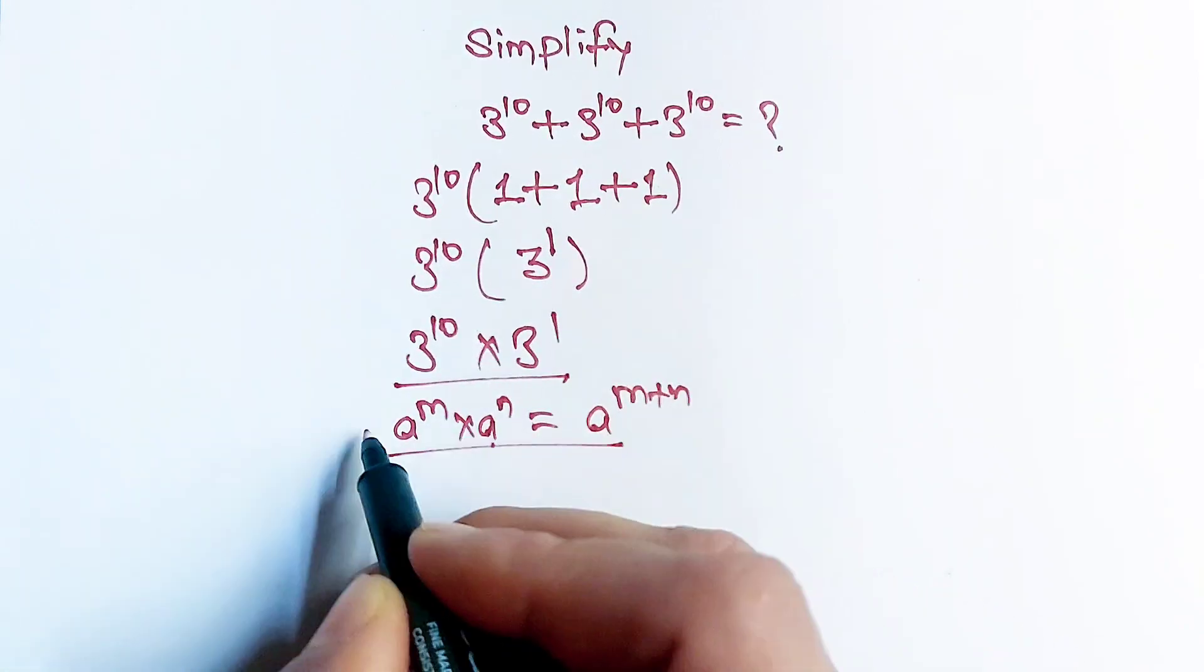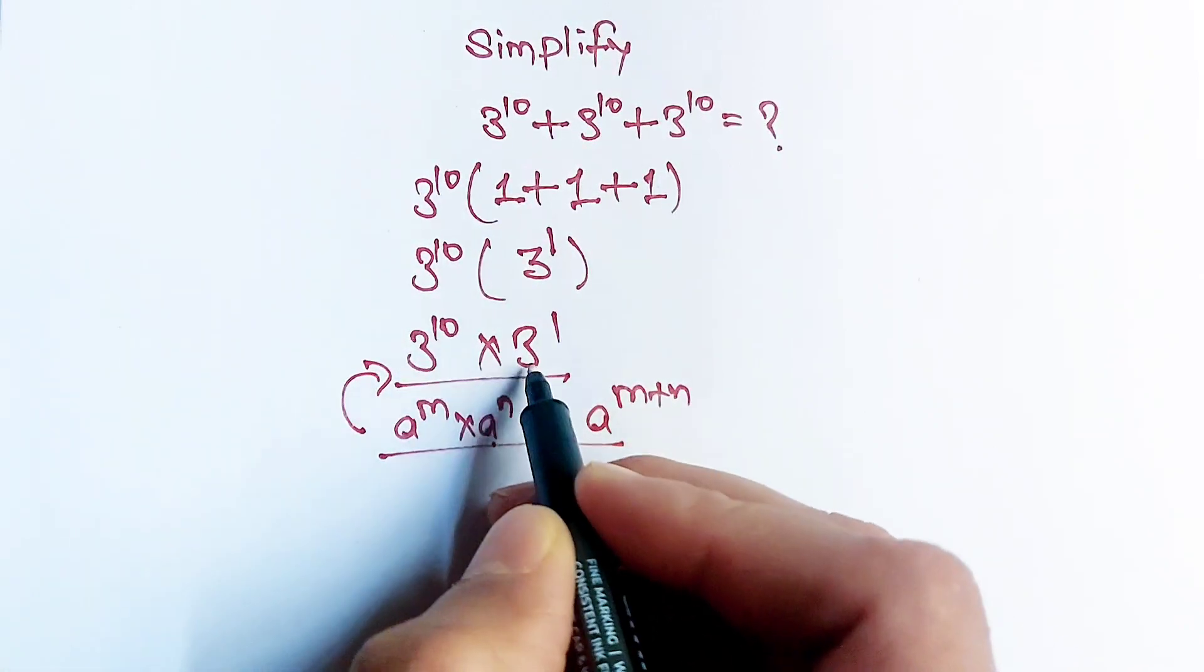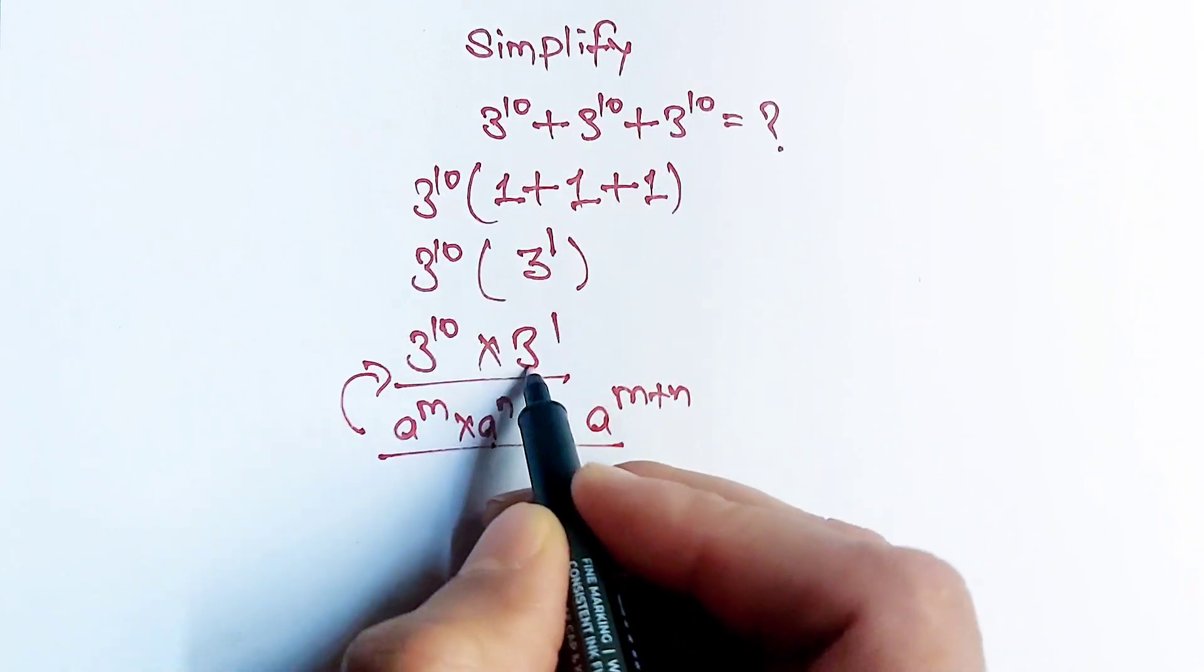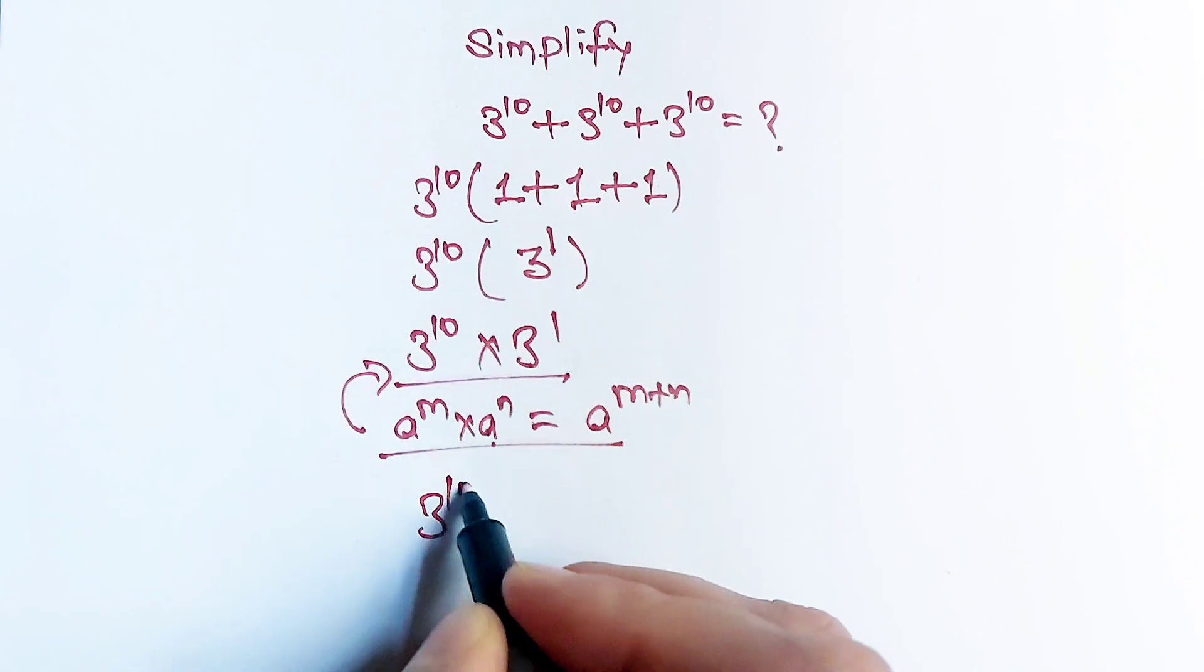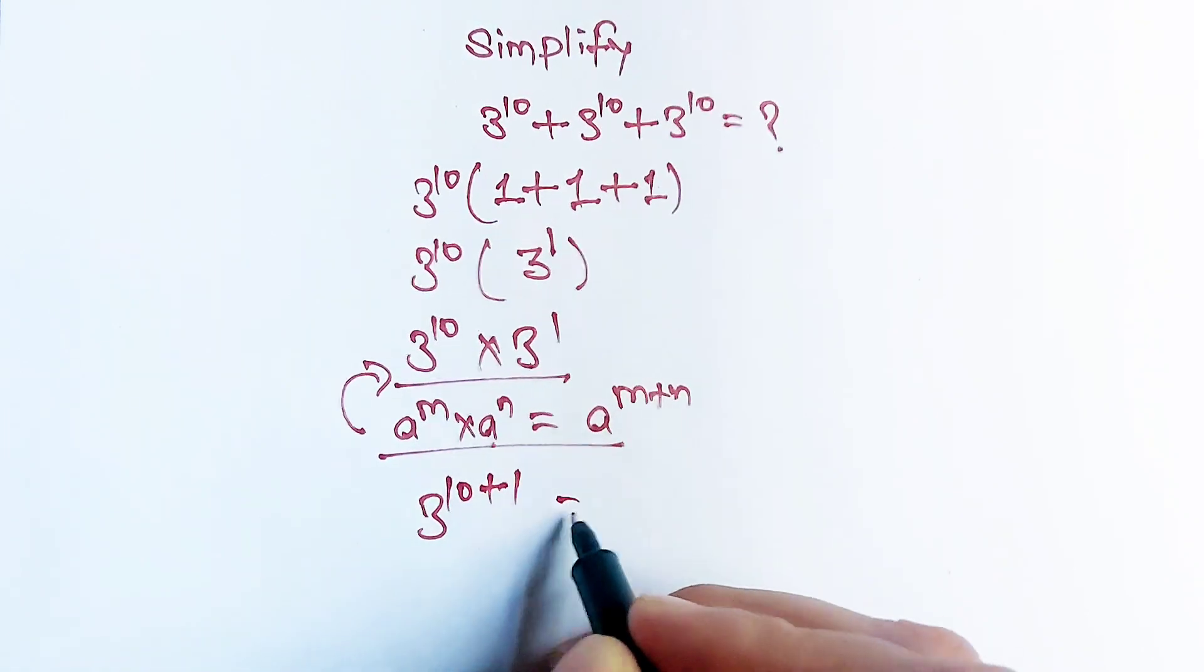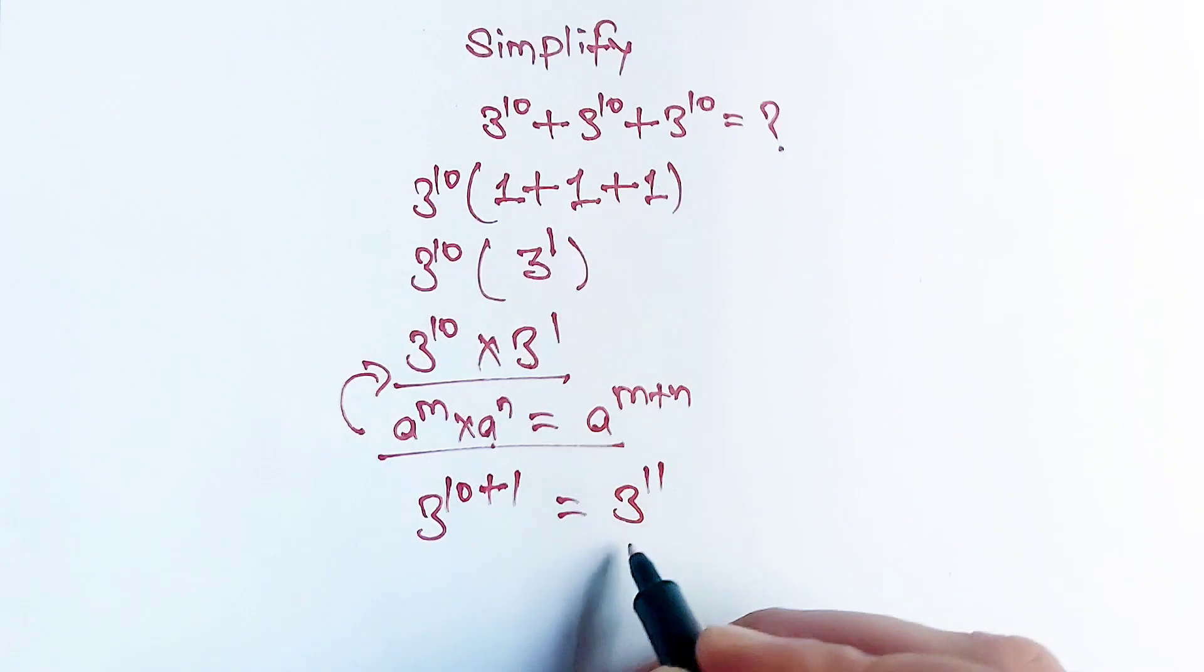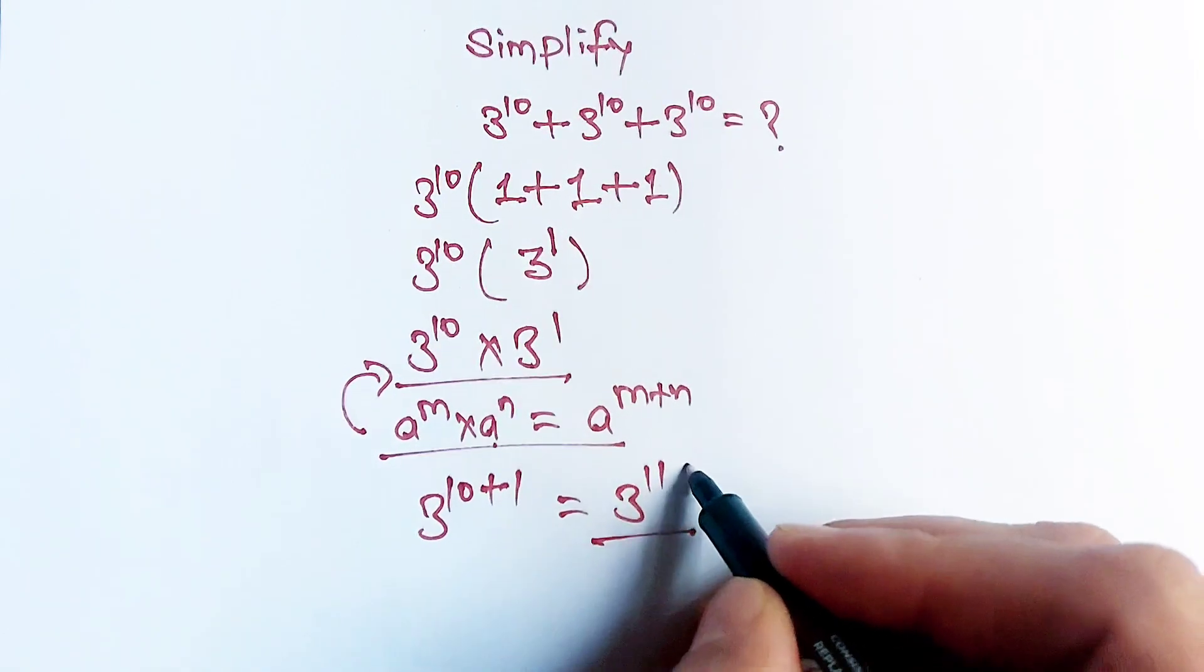Now apply this formula here. 3^10 and 3^1, the bases are the same so the powers will be added: 3^(10+1). This will become 3^11, and that's our final answer.